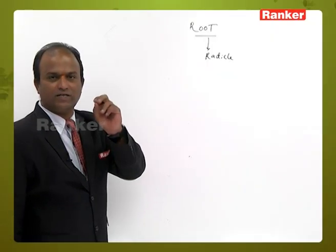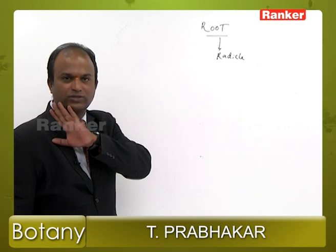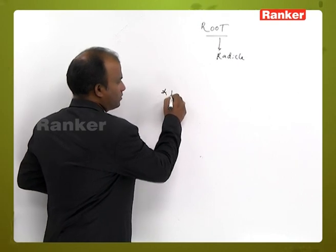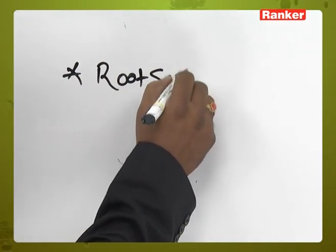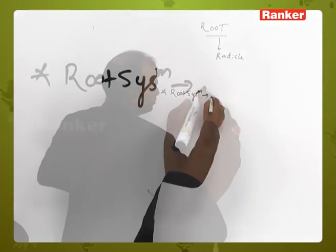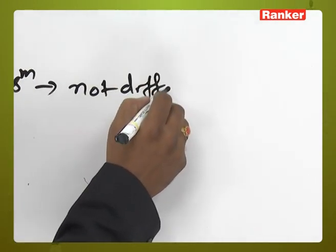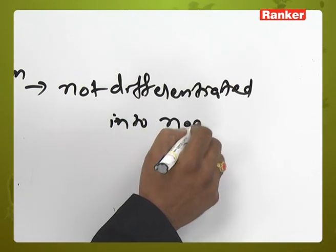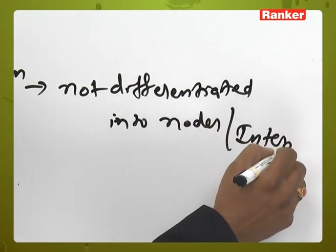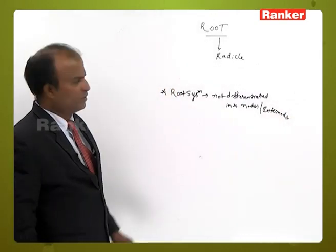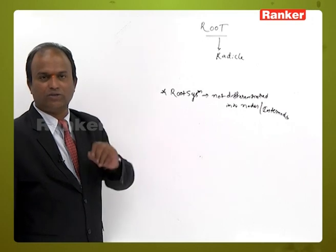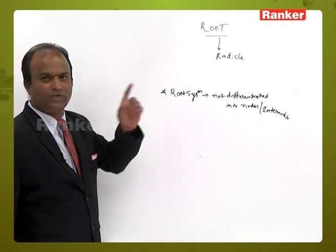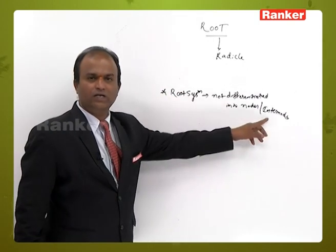The root system is not differentiated into nodes and internodes, whereas the stem is differentiated into nodes and internodes. So that is one key difference between the root system and the stem system.